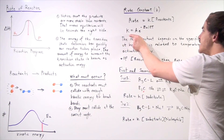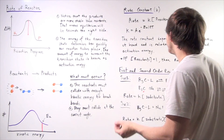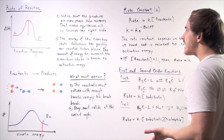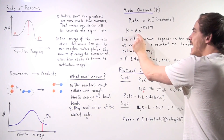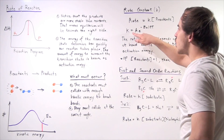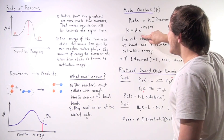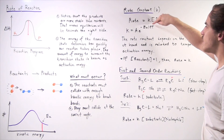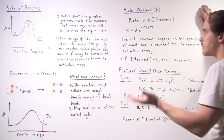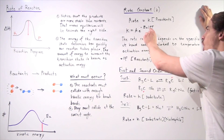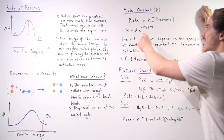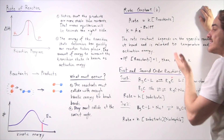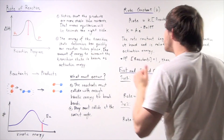This equation, known as the Arrhenius equation, gives us the rate constant of our reaction. K is equal to A, which is known as the steric factor, times e to the negative EA divided by RT. T is the temperature in Kelvin, R is our gas constant, and EA is simply our activation energy.